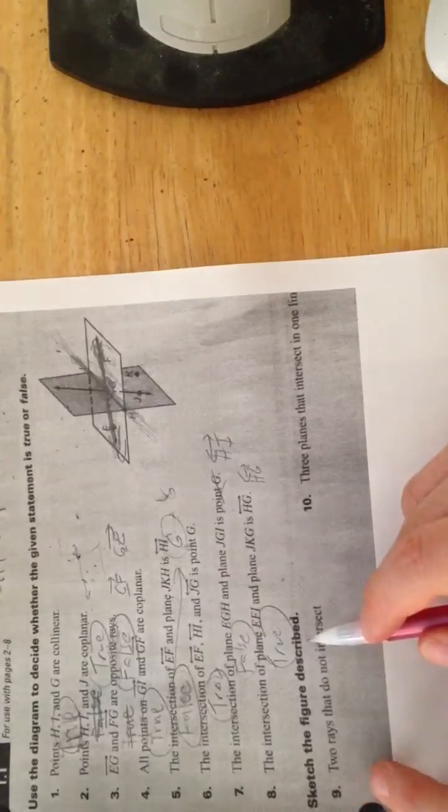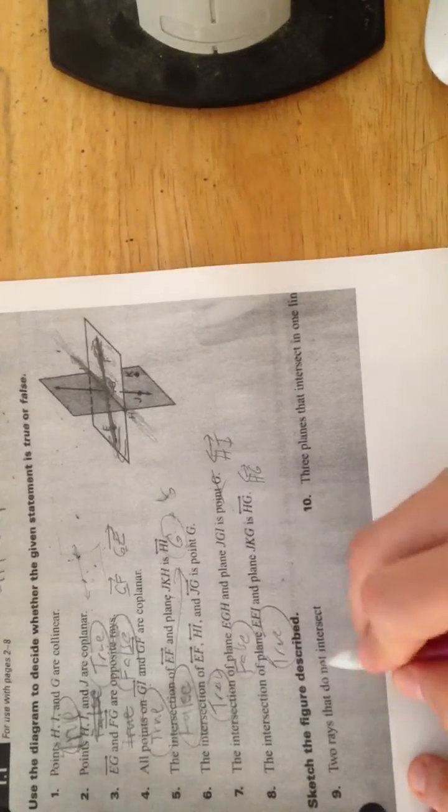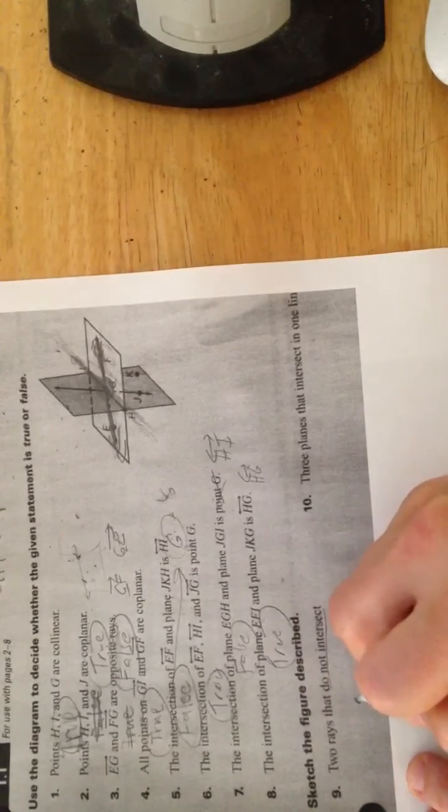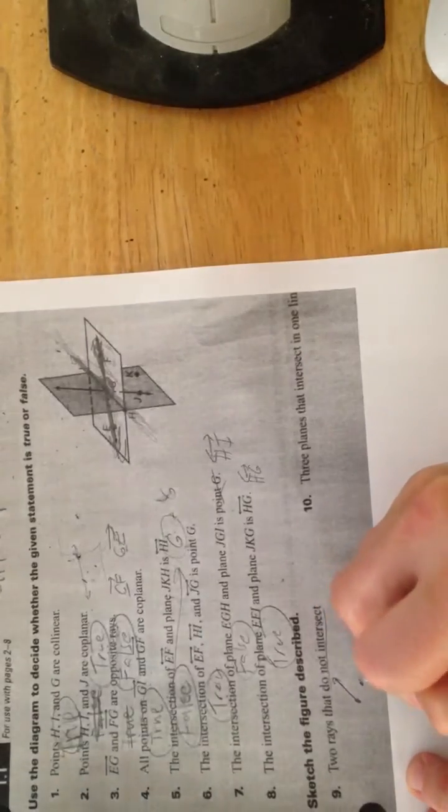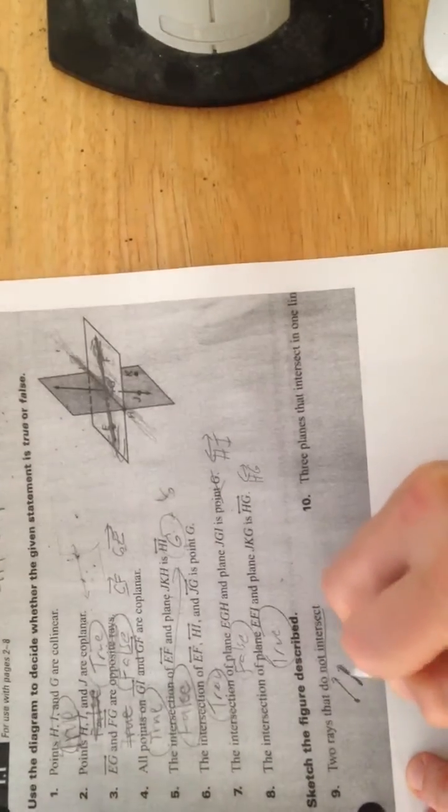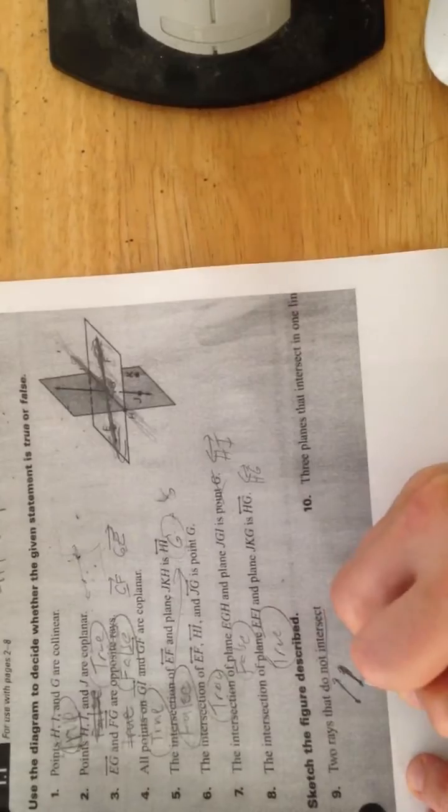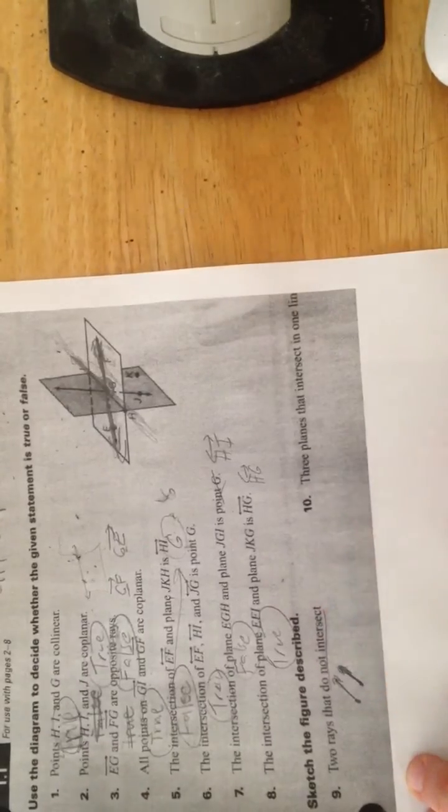Sketch the figure that's described. Two rays that do not intersect, so they must be parallel, so just draw two little parallel, oopsie, that's supposed to be parallel, they're not supposed to touch, so yay, two rays that don't touch.